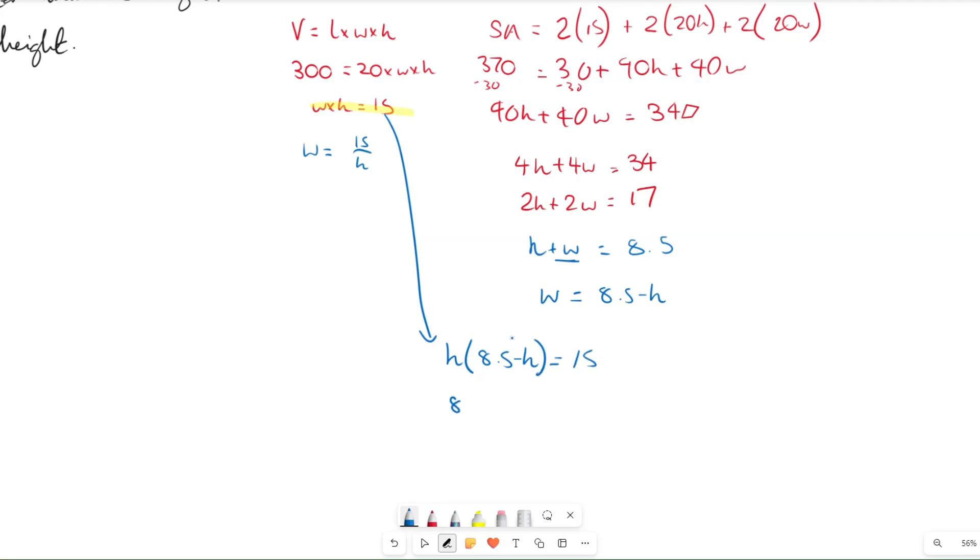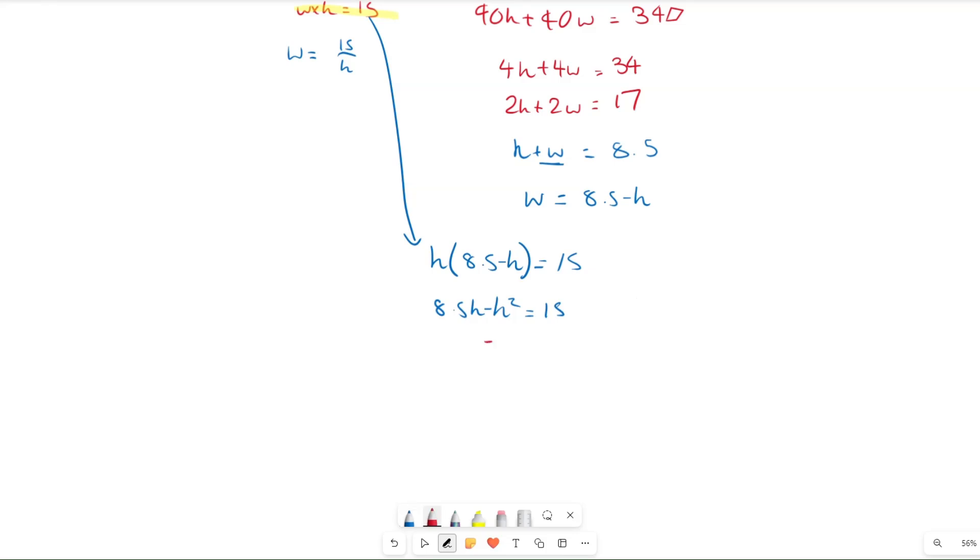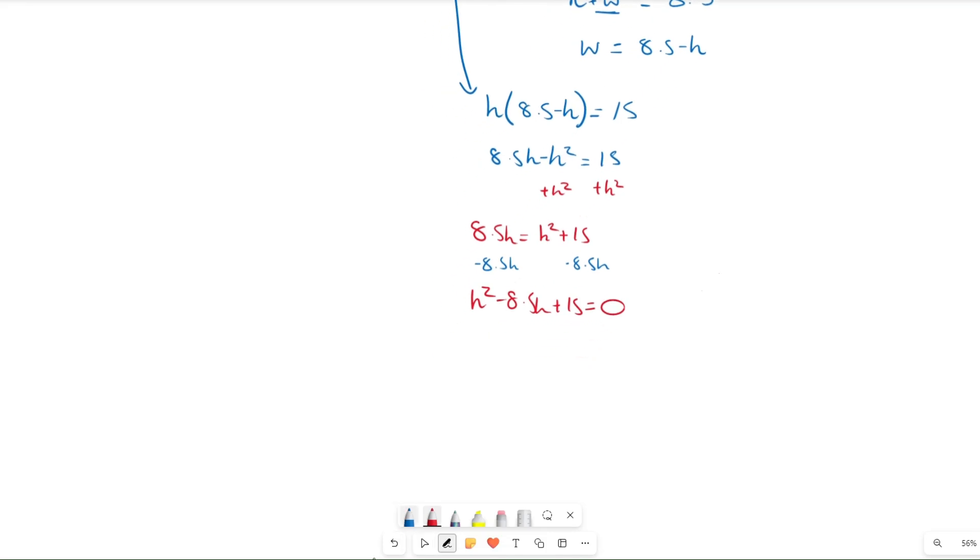If we make the quadratic properly equal to zero, then we can add h squared on both sides, so we get 8.5h equals h squared plus 15, and then subtract 8.5h from both sides, and then we get h squared minus 8.5h plus 15 equals zero. Let's multiply by 2 to get rid of this fractional component, and we end up with 2h squared minus 17h plus 30 equals zero.